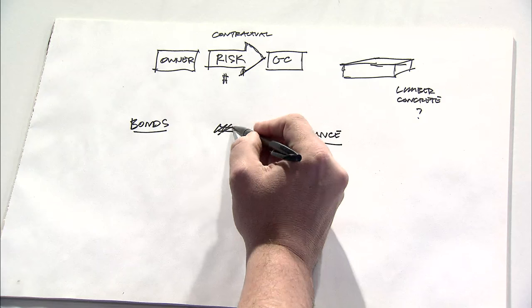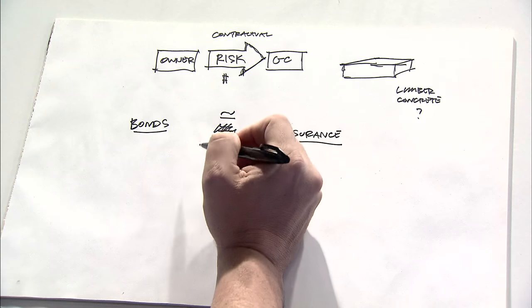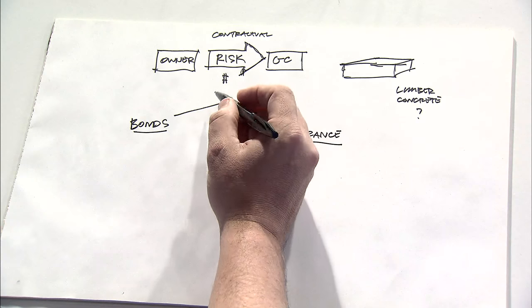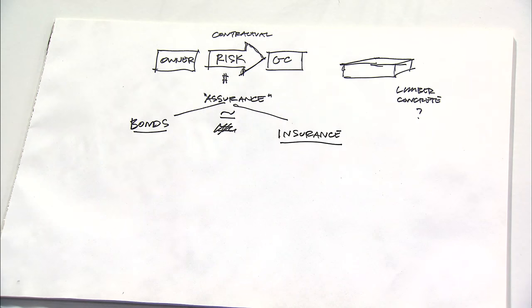So, collectively, maybe a way to look at this is that bonds and insurance are somewhat similar in many ways. The most common way that they're similar is that they're both forms of assurance. In other words, bonds and insurance are both ways for one party to mitigate risk in favor of another.